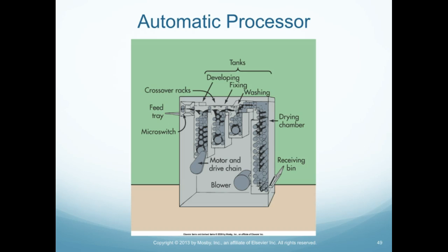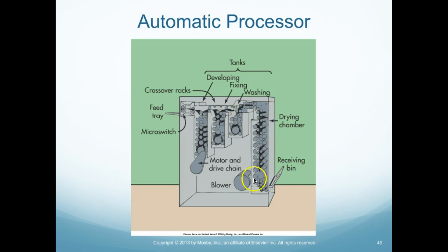We can see the feed tray here, then basically the developer, the fixer, and then the wash. Nothing like a picture to explain it all. And then we have the drying chamber, and then the receiving bin, and the blower. These are the long vertical bins that we were talking about, and this is how it would happen.